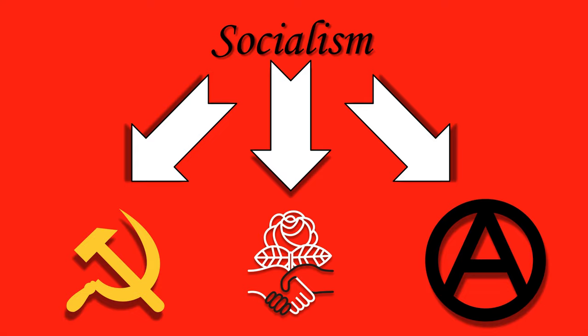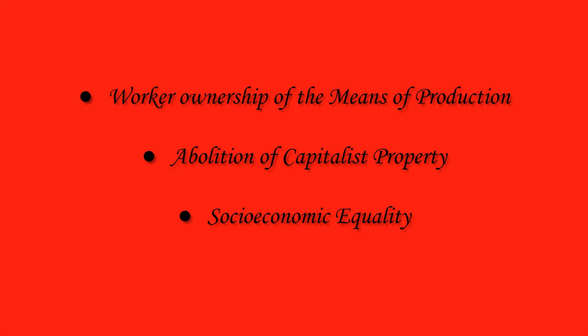Socialism, in general, has three core tenets: worker ownership of the means of production, abolition of capitalist property, and socioeconomic equality. Like Neapolitan ice cream, socialism comes with three flavors: communism, anarchism, and democratic socialism. While all pursue the core tenets of socialism, they disagree on the means to achieve those goals and what exactly those goals entail.